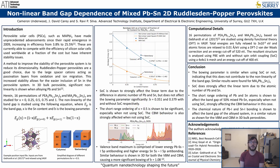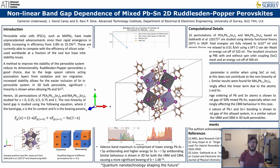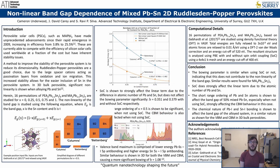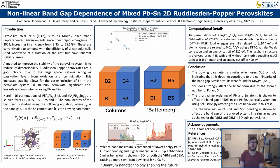Now that we have a more stable setup, we can think about including tin as the B-site metal. We've studied the mixed lead-tin alloy system for a monolayer Ruddlesden-Popper perovskite, as shown in this structural input file. We will also refer to the 50-50 mixed lead-tin systems by the following names — columns and Battenberg — depending on the short-range ordering of lead and tin atoms.